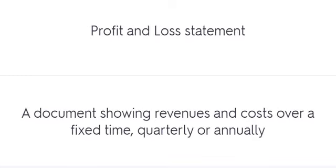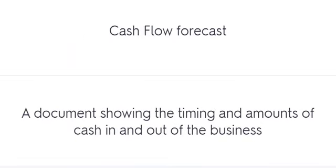Profit and Loss Statement: a document showing revenues and costs over a fixed time, quarterly or annually. Cash Flow Forecast: a document showing the timing and amounts of cash in and out of the business.